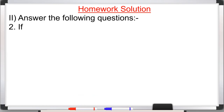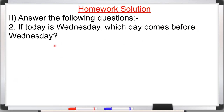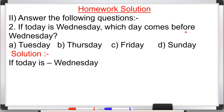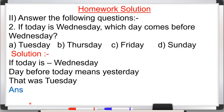Question number two: if today is Wednesday, which day comes before Wednesday? Options are A: Tuesday, B: Thursday, C: Friday, D: Sunday. The day before Wednesday means yesterday — yesterday was Tuesday. So option A, Tuesday, is correct.